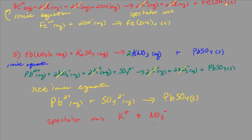Now we write the net ionic equation. We have the lead ion and sulfate ion producing solid lead sulfate. The spectator ions were the potassium ions and the nitrate ions — they didn't participate in the chemical reaction. It was the lead ion and the sulfate ion combining to form the solid lead sulfate.